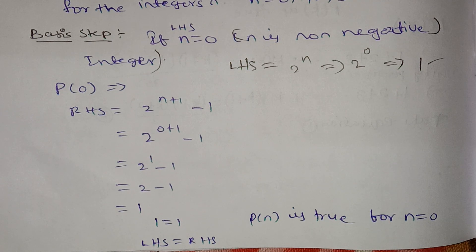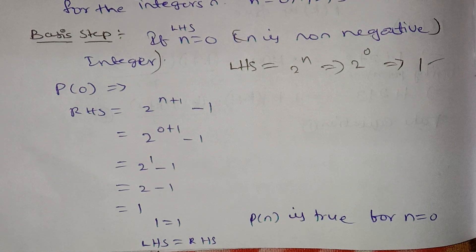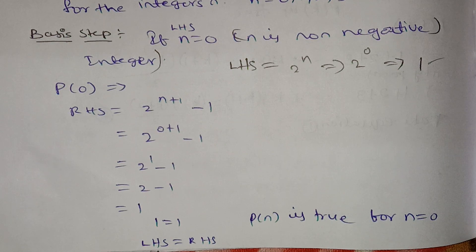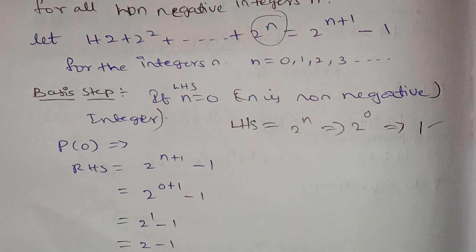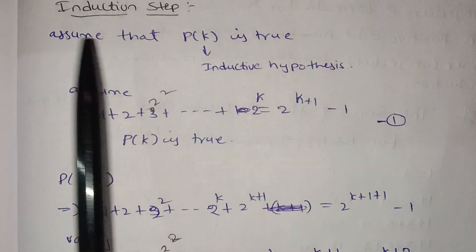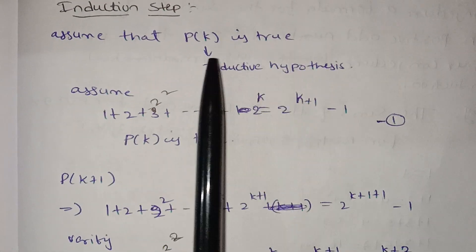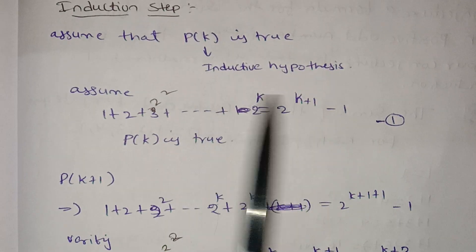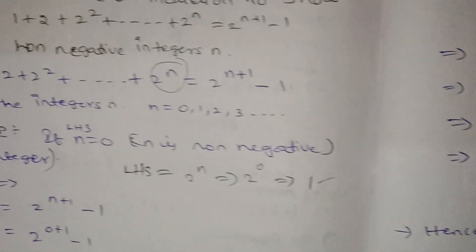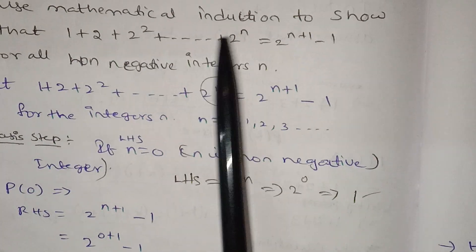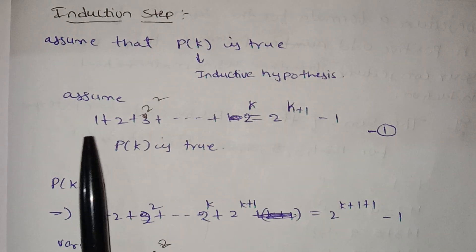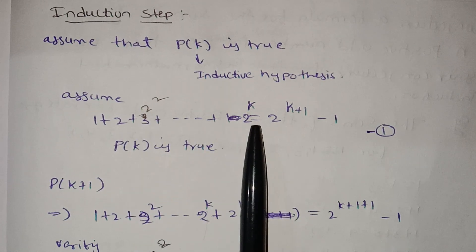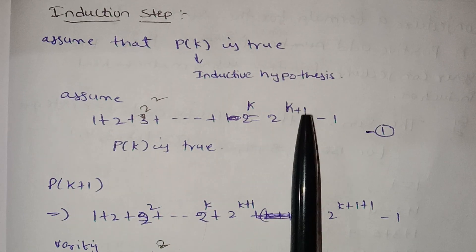We will find the inductive hypothesis in the induction step. The inductive hypothesis is P(k) — we substitute k in place of n. Assume that P(k) is true. The induction hypothesis is: 1 + 2 + 2² + ... + 2^k = 2^(k+1) − 1.